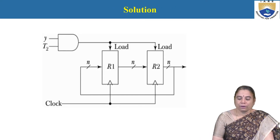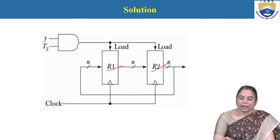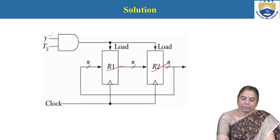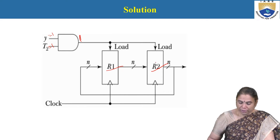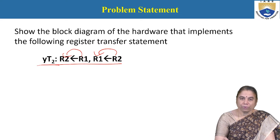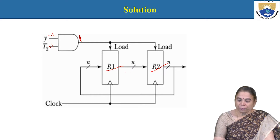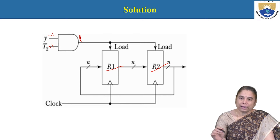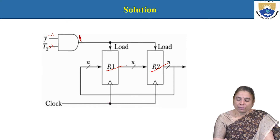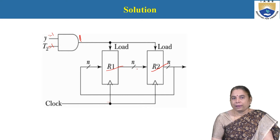So here two registers R1 and R2 are used. When Y·T2 — indicating Y value 1 and T2 is 1 — the control result is 1. When this happens, the clock has to be raised so that the N bits can be transferred between R1 and R2, and R2 and R1. When the condition Y·T2 is satisfied, only during that clock pulse can the transfer between the two registers take place simultaneously.